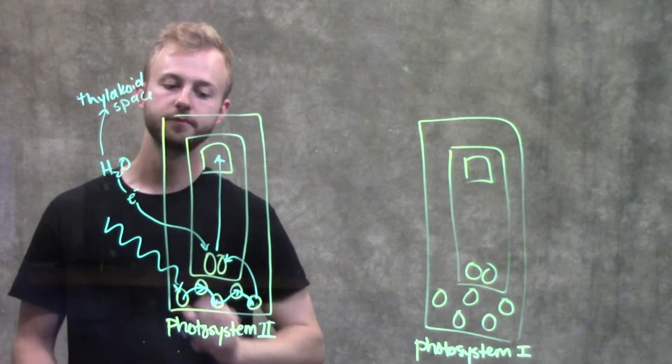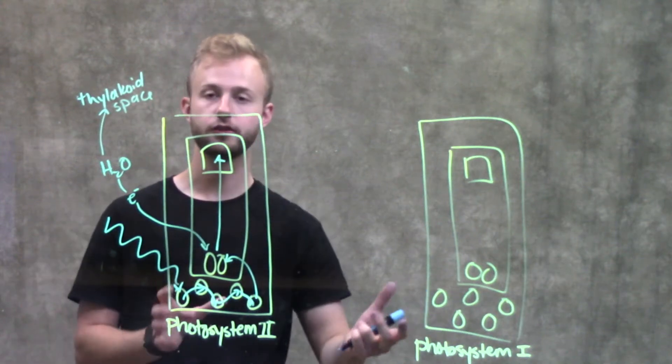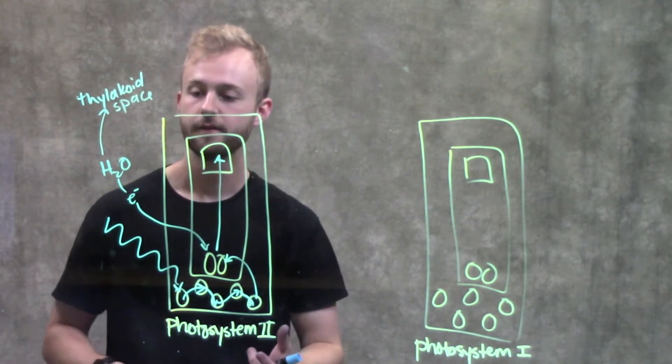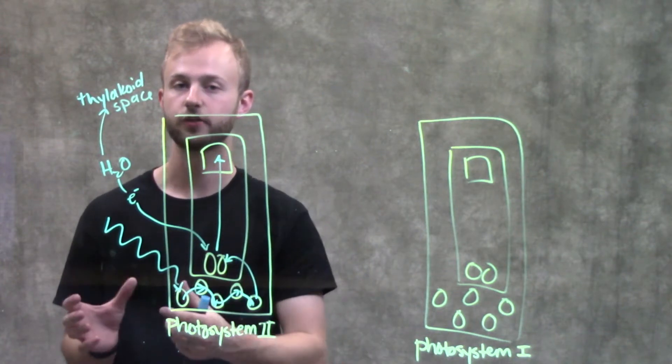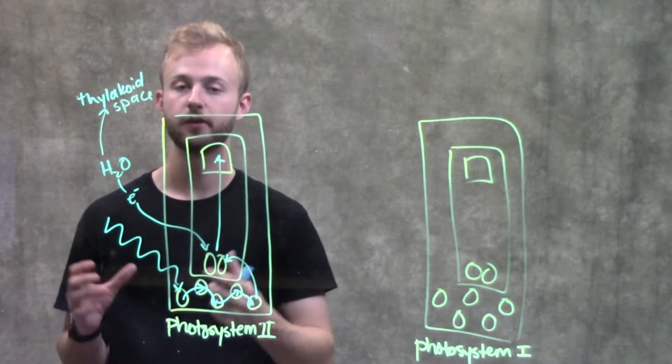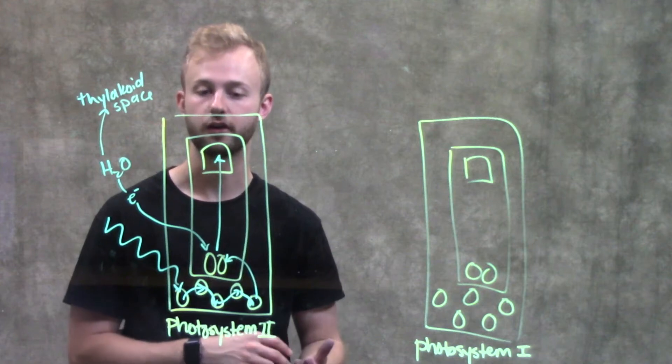The photosystems and other components are located in the thylakoid membrane. We pump these protons into the thylakoid space to create a proton gradient that can be used to do work later on.